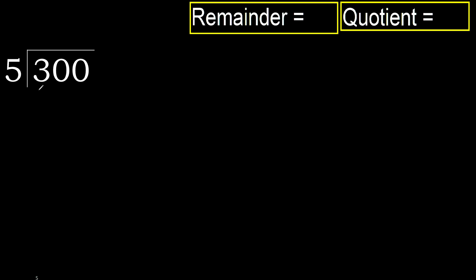300 divided by 5. 3 is less, therefore next. 30 is not less, therefore with 30.